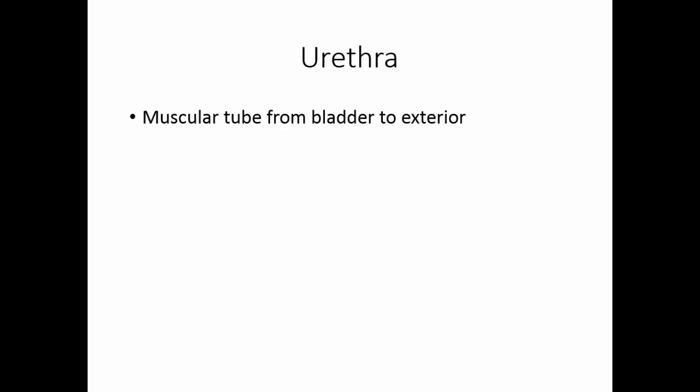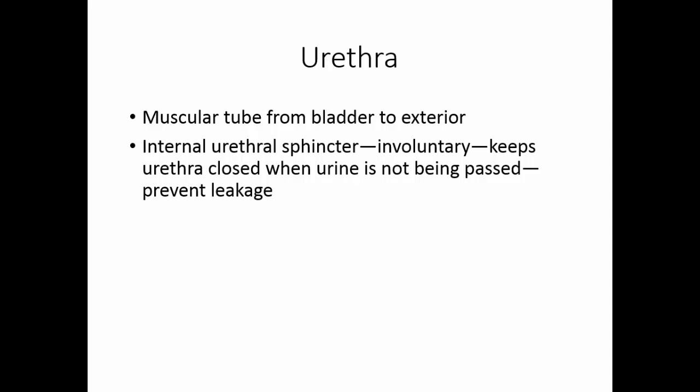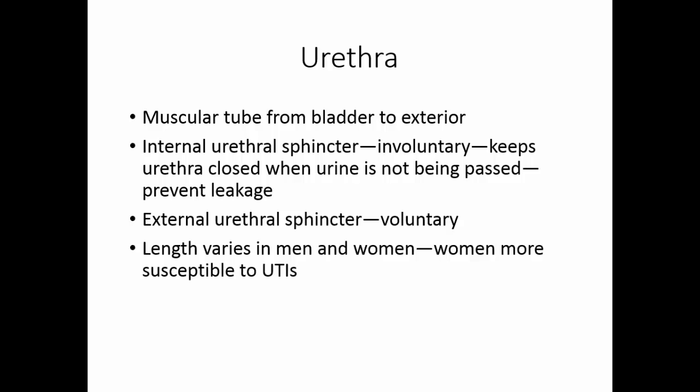The urethra is a muscular tube from the bladder to the exterior. There is an internal urethral sphincter that is involuntary muscle — it keeps the urethra closed when urine is not being passed and helps prevent leakage. The external urethral sphincter is voluntary; over the first couple of years of life, people learn to control this. The length of the urethra varies in men and women. Because women have a shorter urethra, they're more susceptible to urinary tract infections.